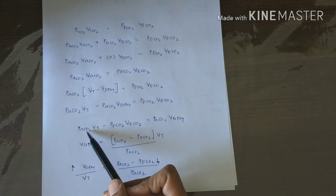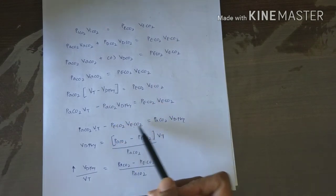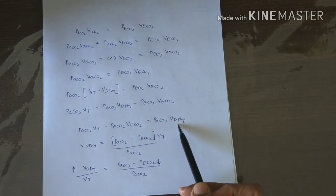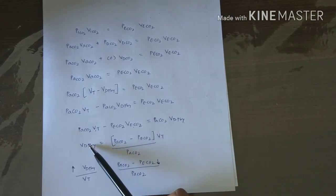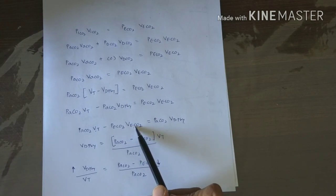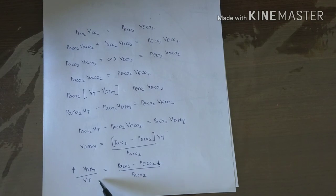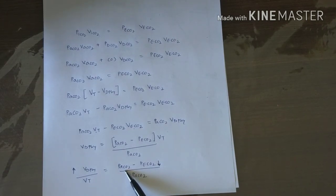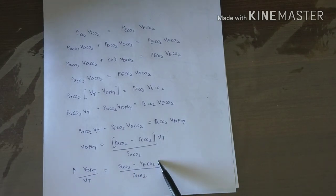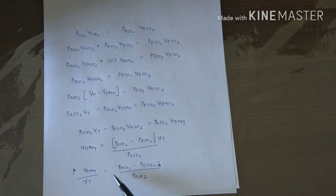Rearranging: partial pressure of CO₂ in alveolar air times tidal volume minus partial pressure of CO₂ in expired air, placing dead space on one side of the equation, and substituting tidal volume for expired volume gives us the final Bohr's equation. CO₂ partial pressure is used because when dead space volume increases, partial pressure of CO₂ in expired air decreases. So by measuring expired CO₂ partial pressure, we can easily calculate physiological dead space.